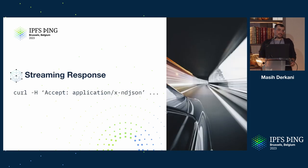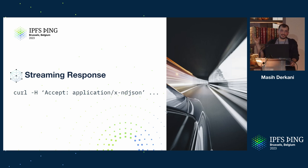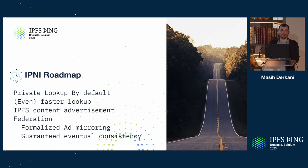For streaming responses, all you need to add is the accept header 'application/x-ndjson'. It just works. If you haven't switched to streaming responses, please do — try it at cid.contact today. There are specific numbers in the cid.contact presentation.